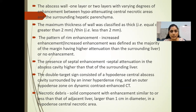Definitions: the abscess wall consisted of one or two layers with varying degrees of enhancement, with central necrotic areas and surrounding hepatic parenchyma. Maximum wall thickness was classified as thick (≥2 mm) or thin (<2 mm). Rim enhancement was defined as the majority of the margin having higher attenuation than the surrounding liver, versus no enhancement. Septal enhancement was defined as septal attenuation in the abscess cavity higher than that of the surrounding liver. The double target sign consisted of a hypodense central abscess cavity surrounded by an inner hyperdense ring and an outer hypodense zone on dynamic contrast-enhanced CT. Necrotic debris was defined as a solid component with enhancement similar to or less than the adjacent liver, larger than 1 cm in diameter within a hypodense central necrotic area.